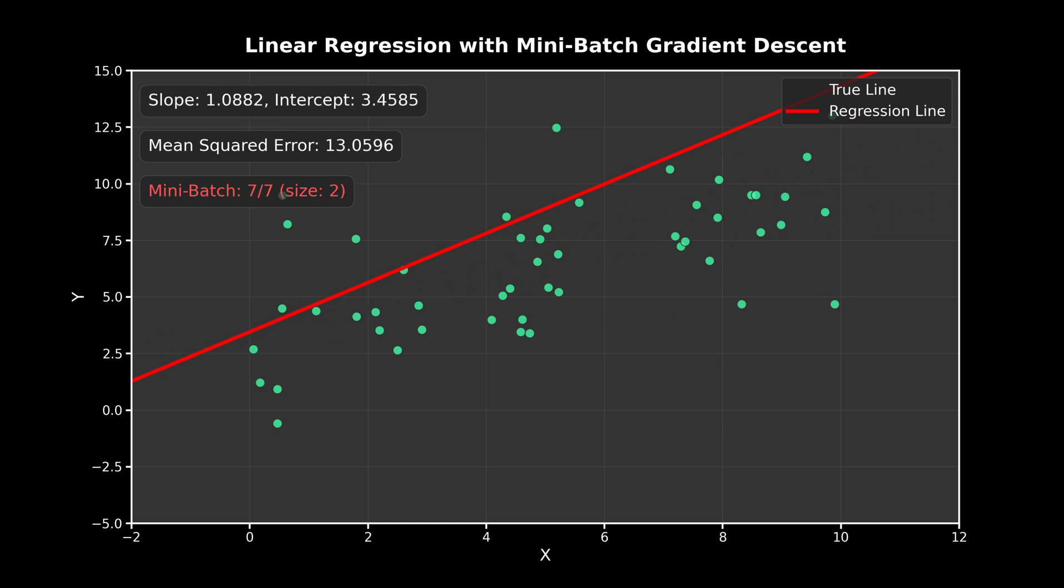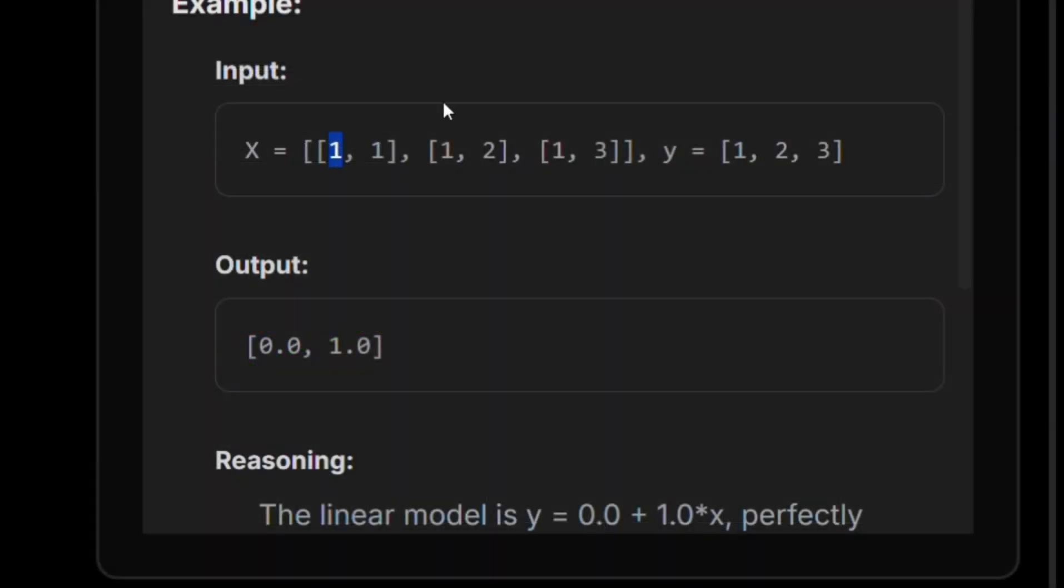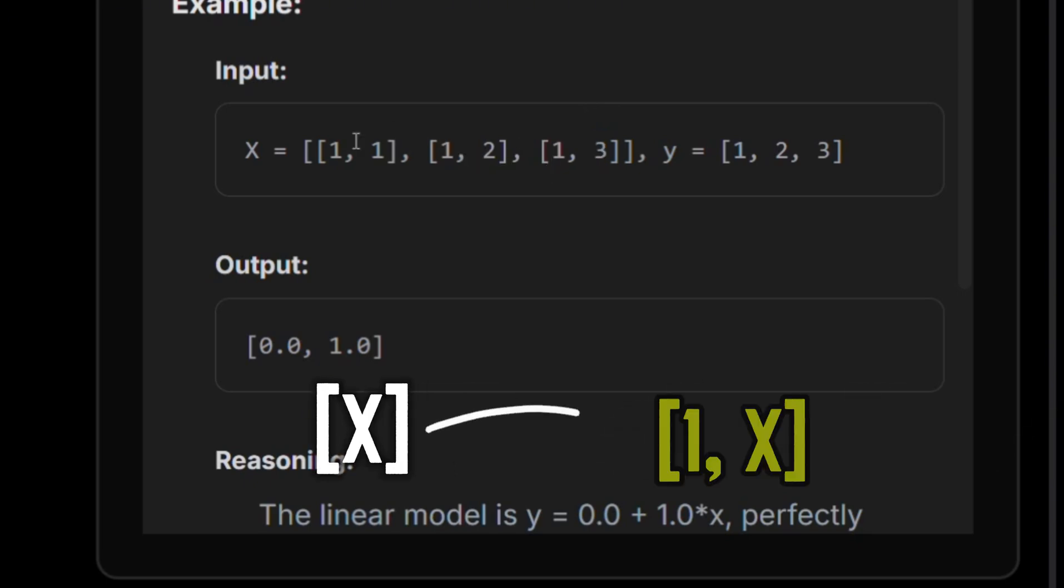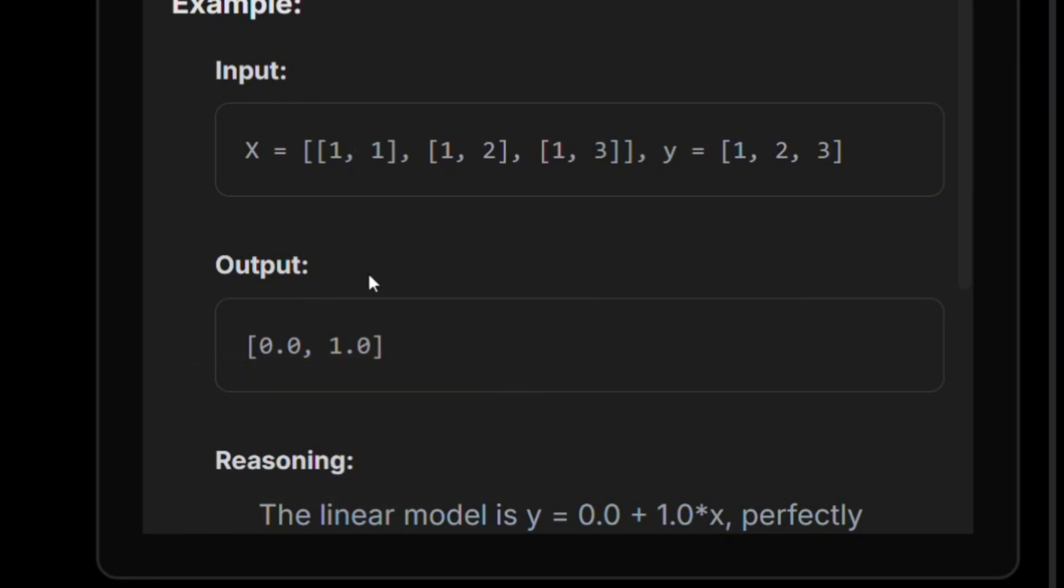Now, before we get into the solution, I want to get your attention to focus on these 1s over here. These aren't actually parts of our input vector. These were added over here. And this is a trick that people use to be able to regress the intercept or the extra coefficient that's used for the offset. Because if we just have these values, we always need to subtract the offset. And when we add this extra 1, we can actually do this all in one single line using matrix operations, which is a very nice trick.